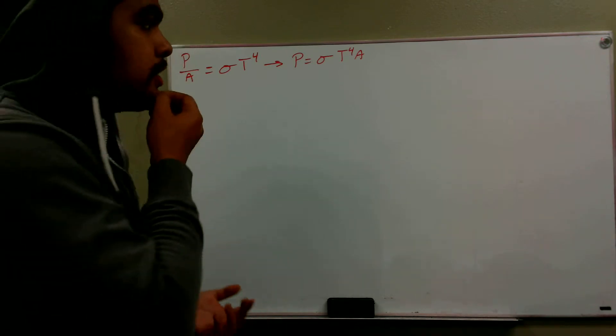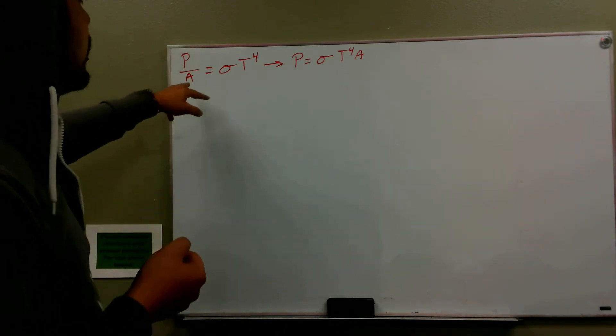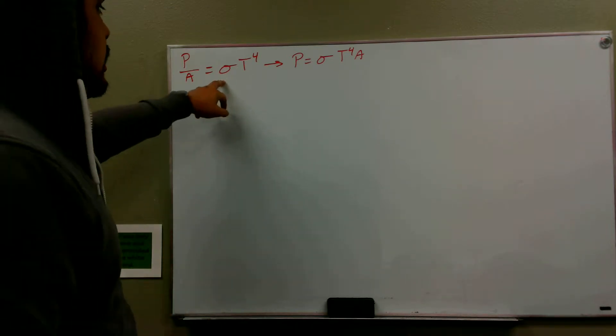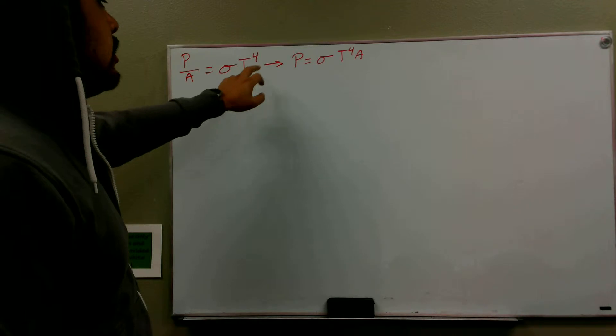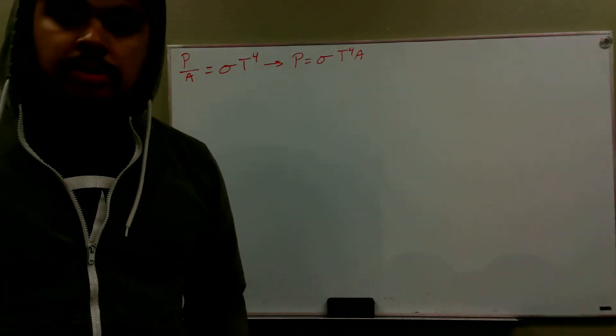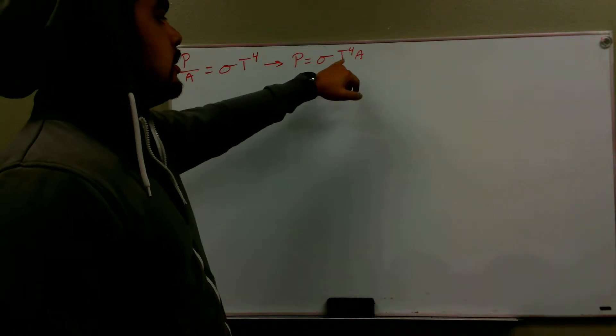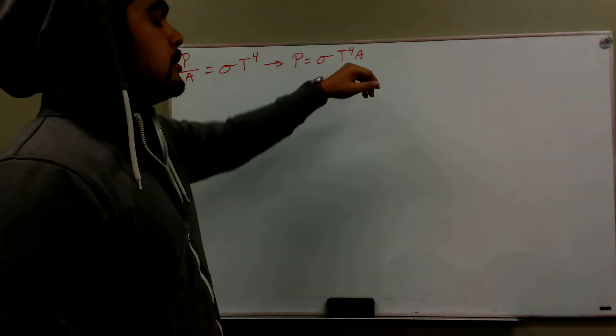To solve this problem, we have the equation here, power over our surface area, which is equal to sigma, which is just a bunch of constants, multiplied by our temperature and that's to the fourth power. All we have to do is rearrange that and we end up getting power equal to our sigma times our temperature to the fourth times our surface area.